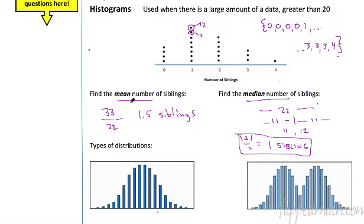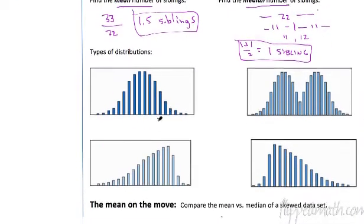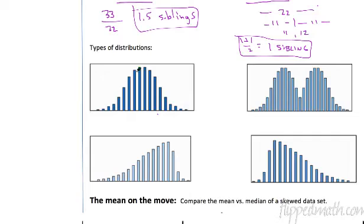So back to this — the reason the mean and median differ is because this data has a funny shape. Let's talk about different shapes of distributions. This one is a normal distribution, or a bell curve, because it looks like a bell. You have an equal number on the left-hand side and the right-hand side — most of it's in the middle, a few down here and a few over there. That's called a symmetric distribution.